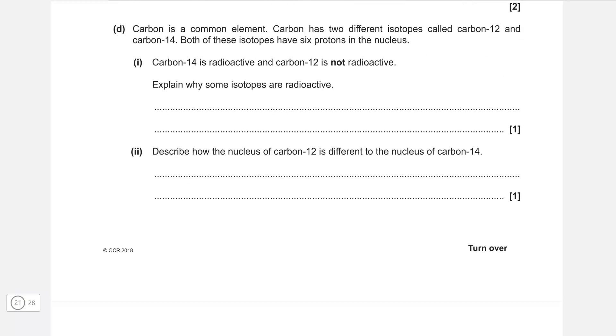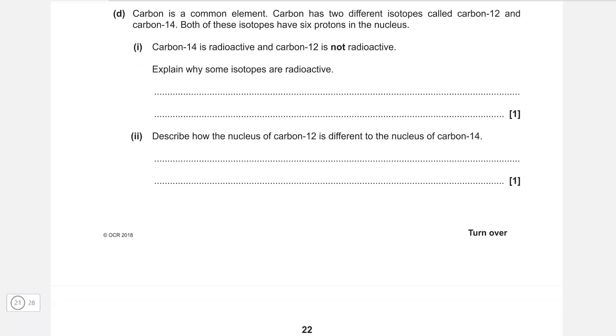Carbon 14 is radioactive and carbon 12 is not radioactive. Explain why some isotopes are radioactive. If something is radioactive, it means that the nuclei are actually unstable. Describe how the nucleus of carbon 12 is different to the nucleus of carbon 14. It has a different number of neutrons. If we want to be more precise, carbon 14 has two more neutrons.